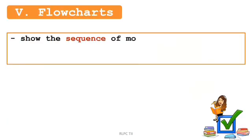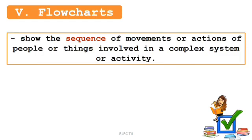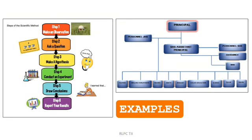The last one is the flowcharts. Flowcharts show the sequence of movements or actions of people or things involved in a complex system or activity. The first one is the steps of the scientific method and the other one is the organizational flowchart.